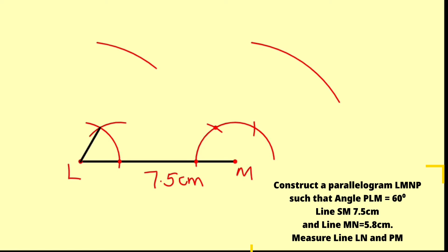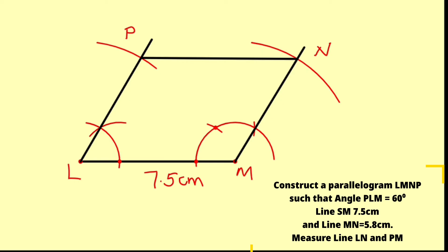This line from L is at 60 degrees — we extend it up to the top arc. Do the same on the other side: the line from M is at 120 degrees — extend it up to the top arc. This gives us point P and point N. Now use the ruler to connect point P and point N together. This is our completed parallelogram. This side is 5.8 centimeters.